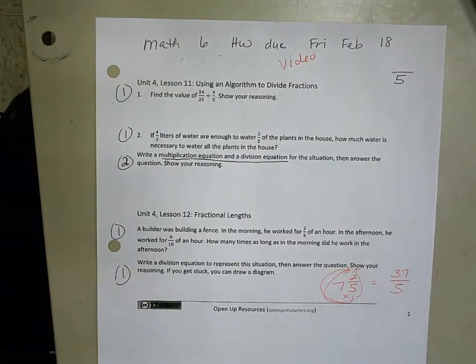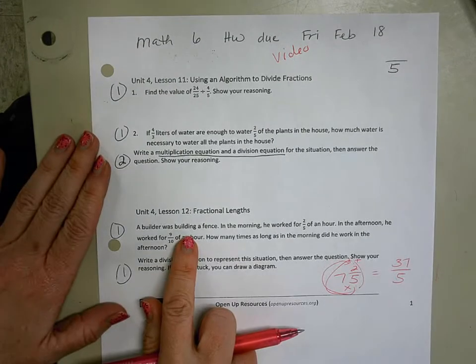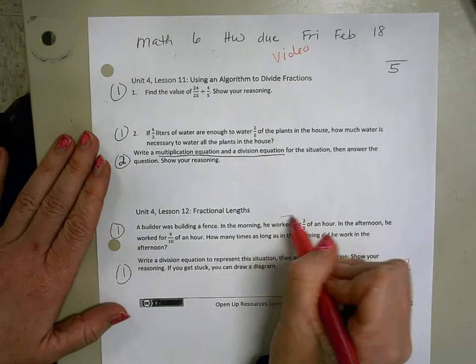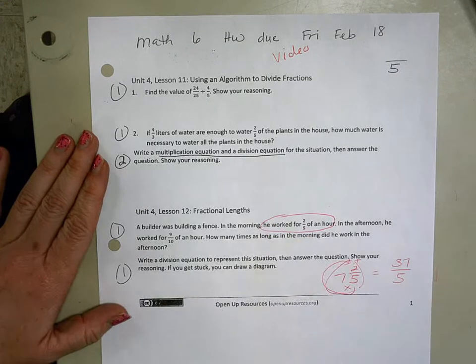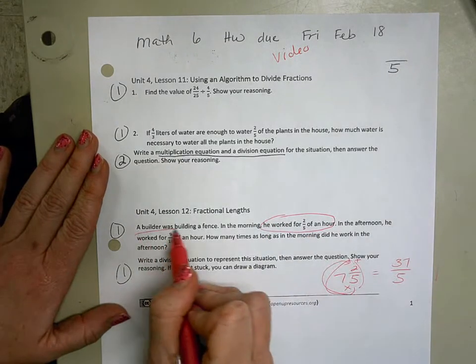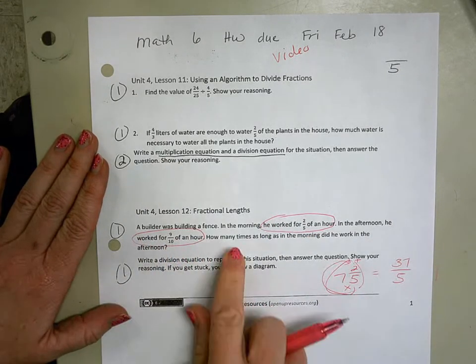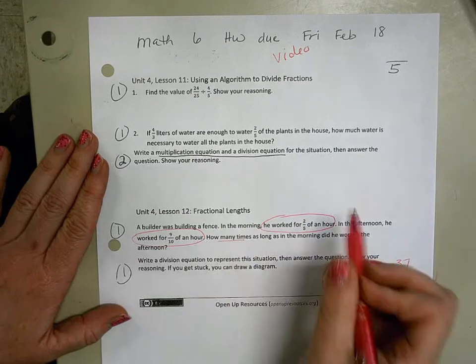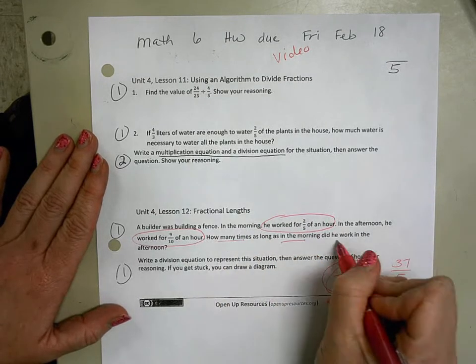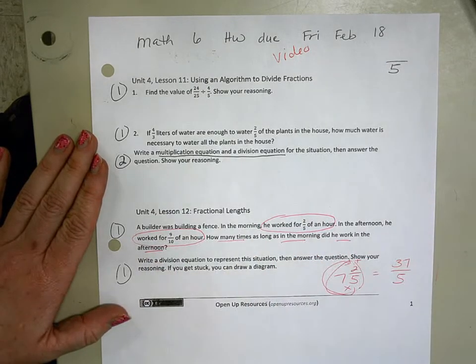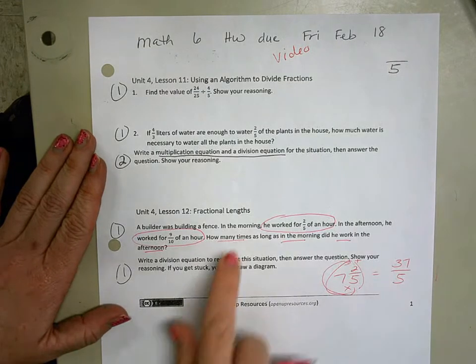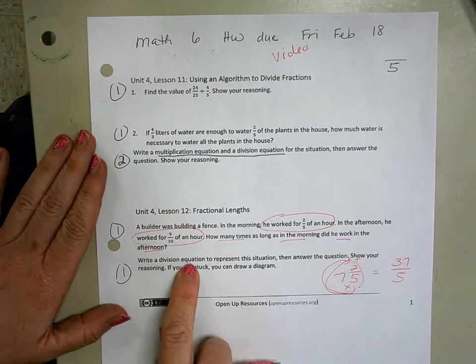A builder was building a fence. In the morning he worked for two-fifths of an hour, and the afternoon he worked for nine-tenths of an hour. How many times as long in the morning did he work in the afternoon? So we can literally take that and write it as a multiplication equation in order to change it into a division equation.